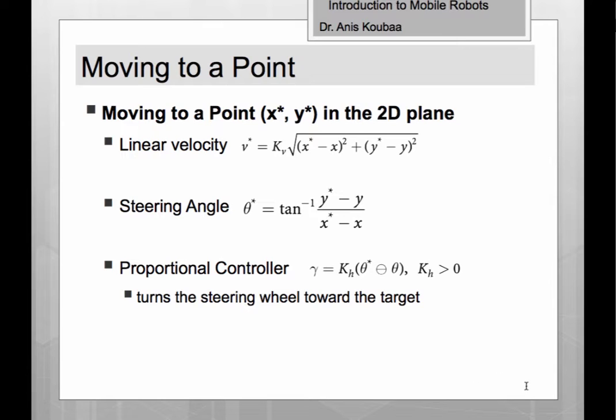For this, we need to implement what we call a proportional controller. So what does a proportional controller mean? Here we have two components: one for the linear velocity and the other for the steering angle, or what we call the angular velocity.